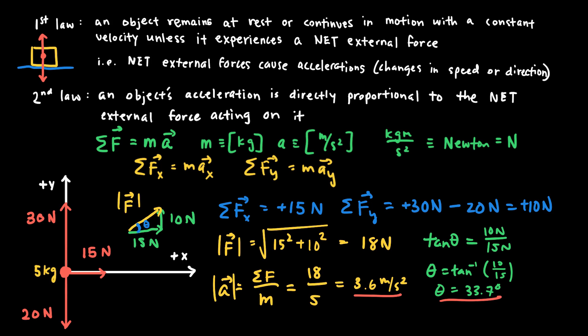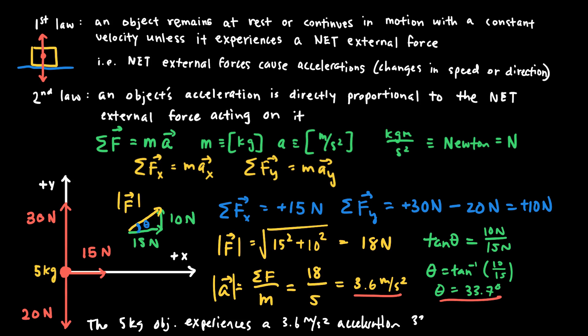The 5-kilogram object experiences a 3.6 meters per second squared acceleration at 33.7 degrees above the positive x-axis. This summarizes both the magnitude and direction of the acceleration the object is experiencing.